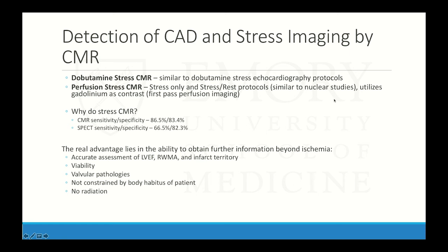For detection of coronary disease and stress imaging we have two modalities: dobutamine stress CMR, similar to dobutamine stress echo with increasing dobutamine and looking for wall motion abnormalities, and perfusion stress CMR, similar to nuclear studies but utilizing gadolinium contrast and first-pass perfusion. The sensitivity and specificity of stress CMR are in the mid-80s — SPECT is slightly less sensitive but about as specific. The real advantage is the extra information from CMR: more accurate LVEF, regional wall motion abnormalities, infarct territory, viability, and valvular pathologies. Regardless of patient size — if they can fit through the bore — image quality is consistent. There are no issues with acoustic windows or attenuation artifacts, and MRI has no radiation.